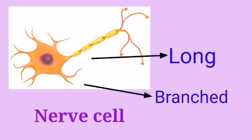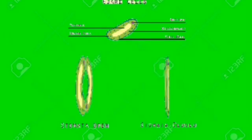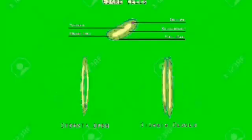Nerve cells are long and branched which help to conduct the impulse from distant part of the body to the brain and vice versa. And guard cells of stomatal pore in the leaves are bean shaped to open and close it.